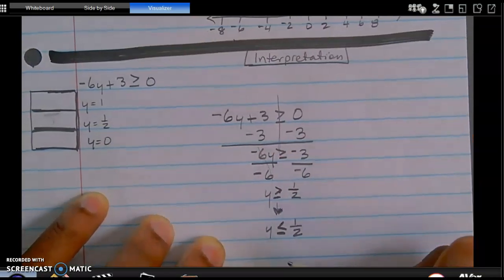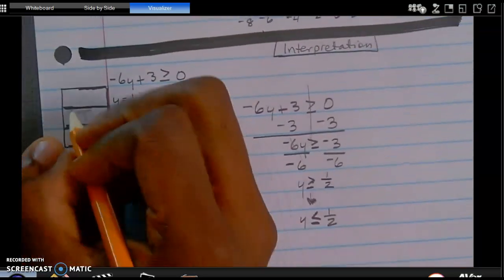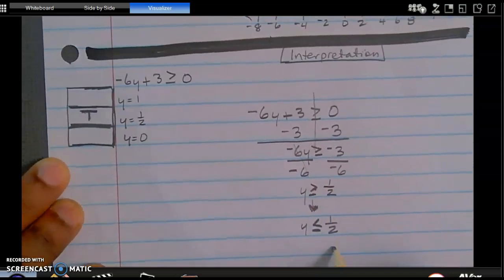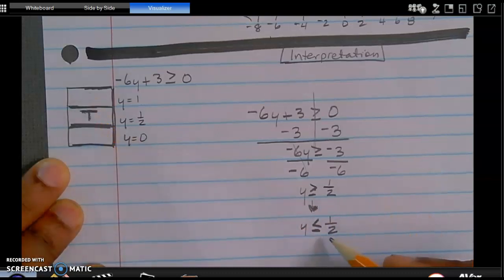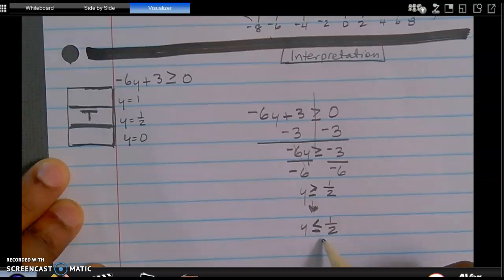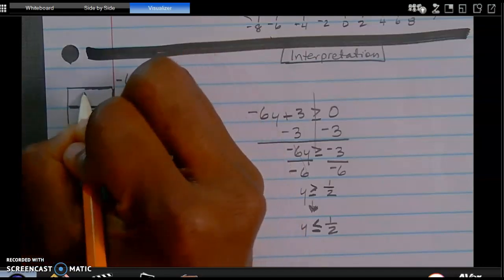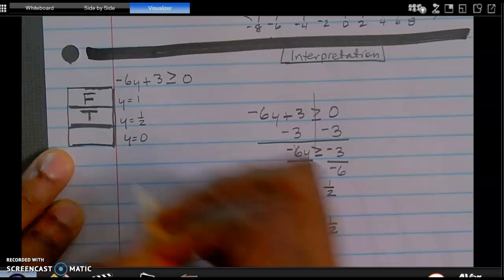So as noted, we know that 1 half, of course, is going to be equal to 1 half. Now, the only other two that I need to interpret at this point is basically a value of y that is going to be less than or equal to 1 half. Is 1 less than or equal to 1 half? No. So that statement is going to be false. What about 0? Is 0 less than or equal to 1 half? Absolutely it is. It is less than 1 half.